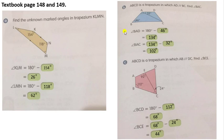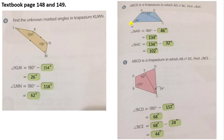Next is page 149. Problem B: ABCD is a trapezium in which AD is parallel to BC. Find angle BAC. First, we find angle BAD: angle BAD equals 180 degrees minus 46 degrees, which gives us 134 degrees.